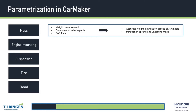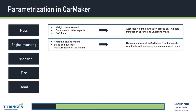For the mass properties, based on weight measurements and inputs from data sheets of the test vehicle, the parameterization was done such that the weight distribution across all four wheels is as accurate as possible. The mass was also partitioned into sprung and unsprung mass. For the engine mounting, the test vehicle was equipped with a hydraulic engine mount, so the mount's properties are amplitude and frequency dependent. Hence, the hydro mount model, which is available in CarMaker version 8 and onwards, fits the requirement of this project very well.